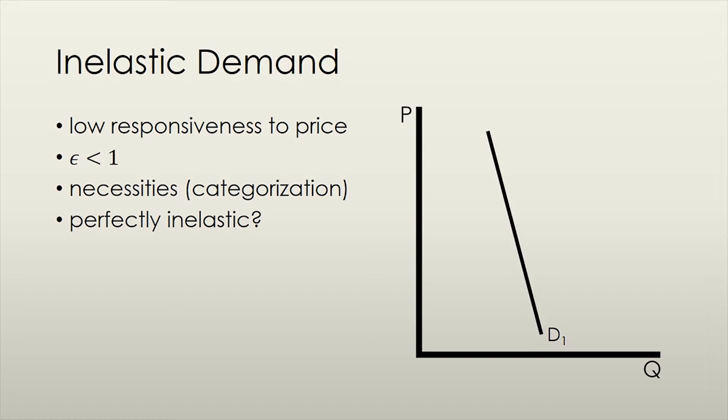If we end up with an absolute value of elasticity of demand that is less than 1, we say that demand is inelastic. If we think back to the way we calculated it, it means that a change in price brings about a proportionally smaller change in the quantity demanded. Think about goods such as insulin, which are necessary for certain people to survive. A change in price would not bring about that much of a change in the quantity demanded because it is a necessity.